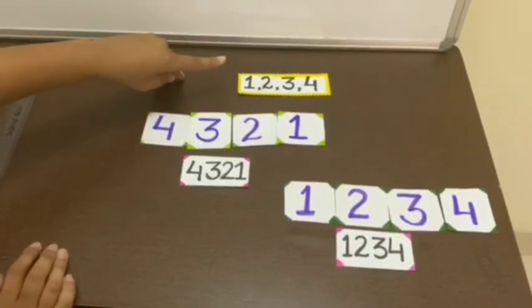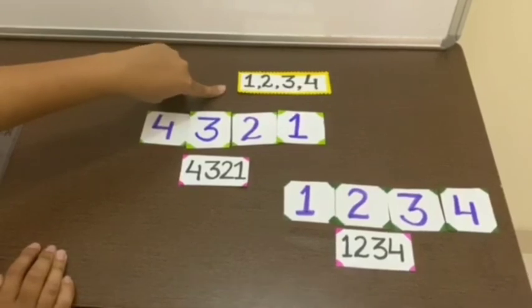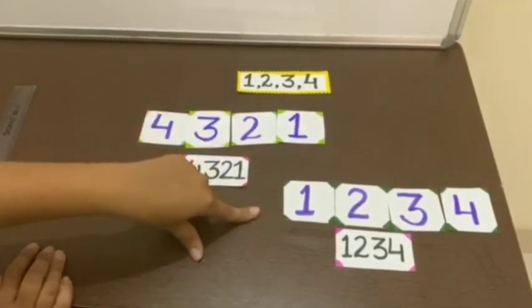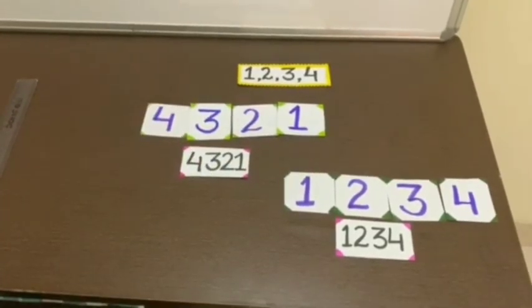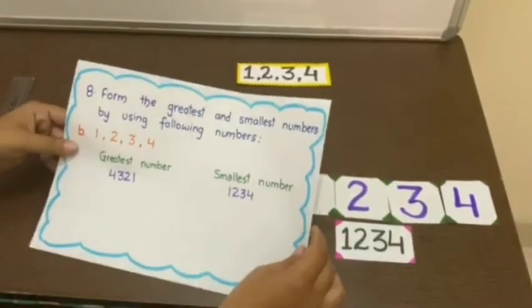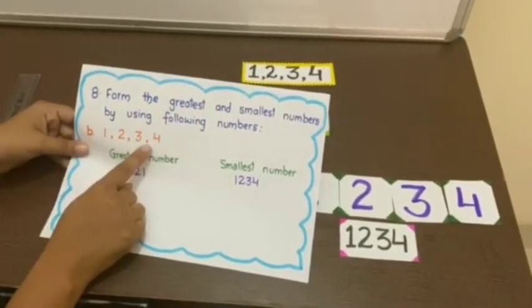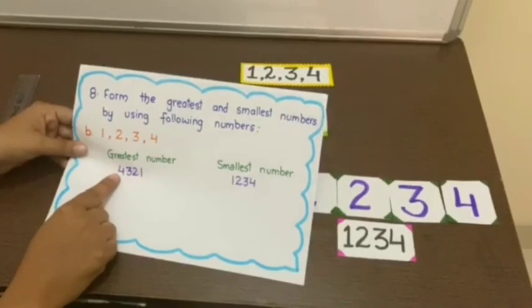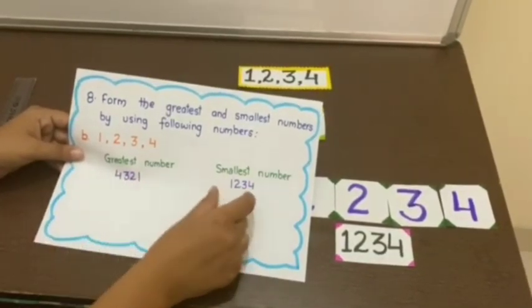So it is clear that to form the greatest number, we will find the greatest number among these to be the first one. And to formulate the smallest number, we will find which one is the smallest to start the number. To answer the question in your notebooks, write the question, then the part you are answering. On one side write greatest number, on the other smallest number and write the number formulated.